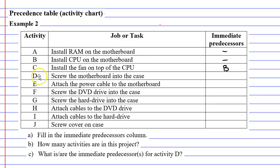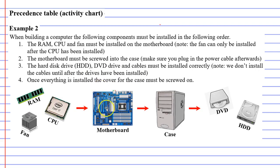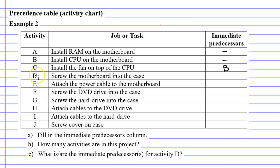Moving on to activity D, where we screw the motherboard into the case. You can't screw the motherboard into the case until the first three components have been put onto the motherboard. That means that in order for activity D to occur, activities A, B, and C must have occurred previously. Now, one of these does not have to be written down — we don't need to write down activity B. The reason is that if we've completed activity C, then we've already completed activity B, so it's implied and we don't need to write it down.